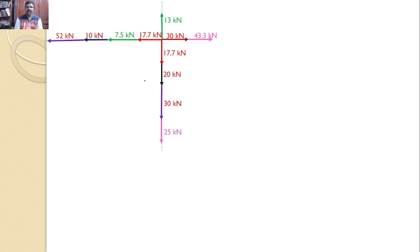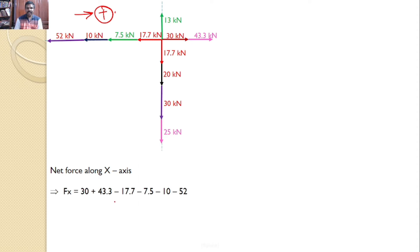Now our interest is to find the resultant force. First, let us find the net force along the x-axis. Taking the rightward direction as positive: 30 + 43.33, and the remaining forces are negative — minus 52, minus 10, minus 7.5, minus 17.7 — which gives a net value of minus 13.9 kN. The negative sign means the net force is towards the left side.